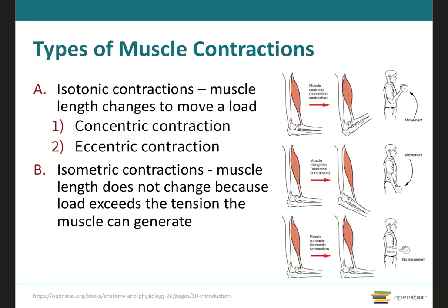In an isotonic contraction — where isotonic means constant tension — the tension developed by the muscle is going to remain almost constant while the muscle changes in its length. Isotonic contractions are used for body movement and for moving certain objects.